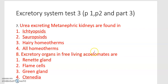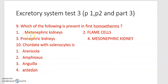Eighth one: excretory organs in free-living acoelomates are — renate gland, flame cells, green gland, and tinidia. Ninth one: which of the following is present in first homeotherms — metanephric kidneys, flame cells, pronephric kidneys, and mesonephric kidney.